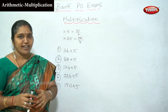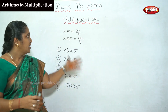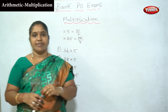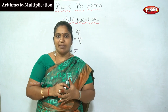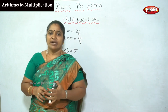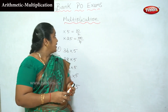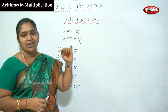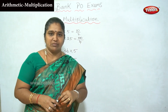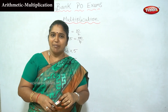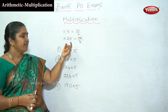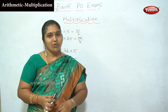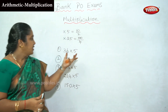Next time, what we will see is multiplying with 5 and 25. We will see 5 in simple form, which is 10 divided by 2. That means 25 is 100 divided by 4.